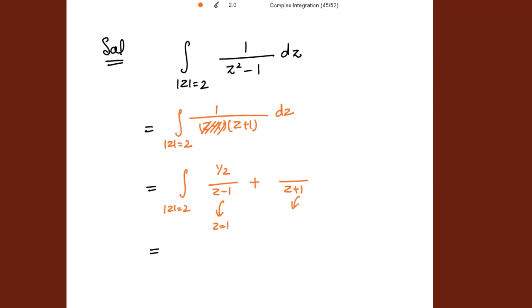Putting the denominator z plus 1 equal to 0, we get z equal to negative 1. So just hide z plus 1 and put z equal to negative 1. We get z minus 1 evaluated at negative 1, which gives negative 1 minus 1 equal to negative 2, so the coefficient is negative 1 over 2. So let's take 1 over 2 common outside.